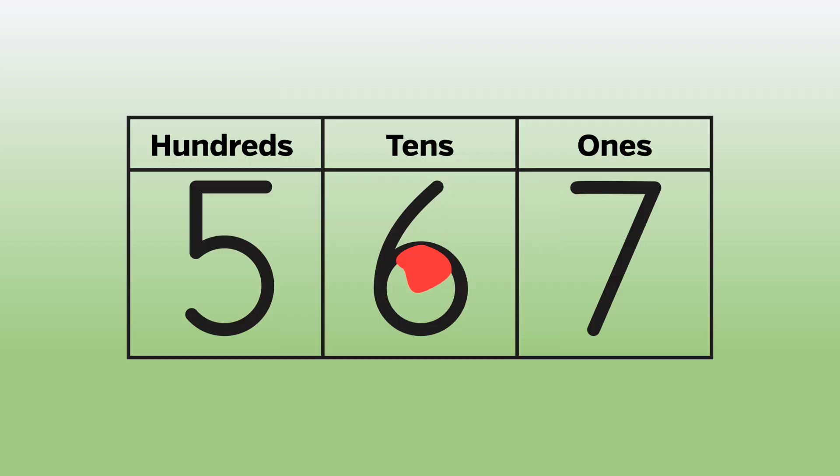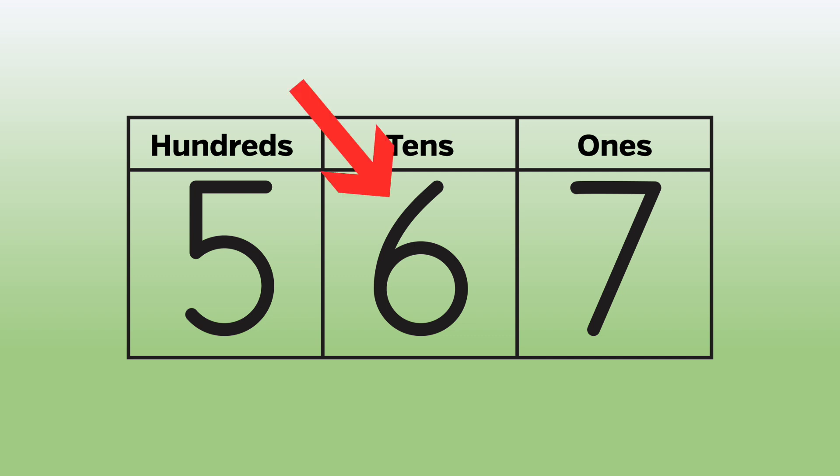Next, we can look at the tens place. We have a six in the tens place. Six tens. That means we will have six longs. One, two, three, four, five, six. Ten, twenty, thirty, forty, fifty, sixty.